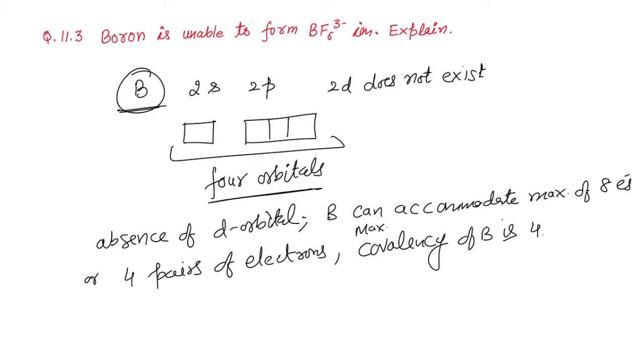That's why BF3 can form BF4^-. Because maximum covalency of boron can be 4 only. But it cannot form BF6^3-. Because boron cannot form 6 bonds.